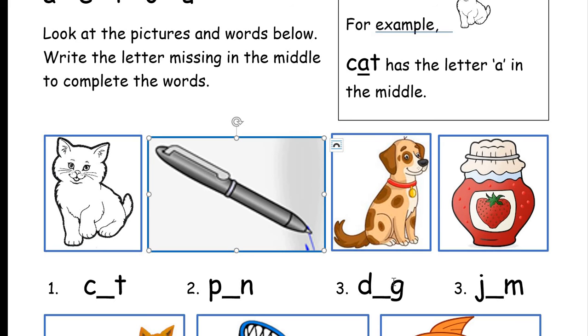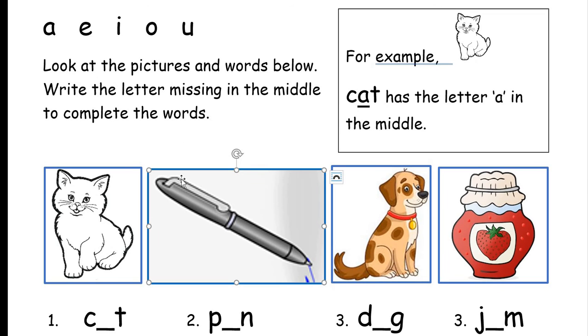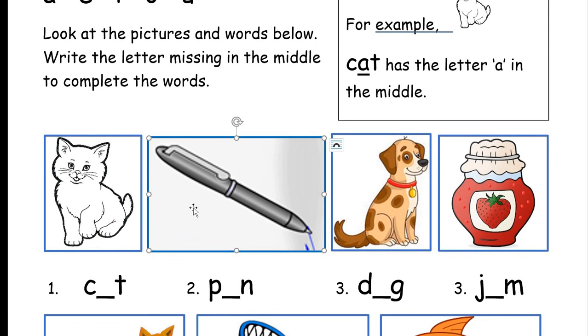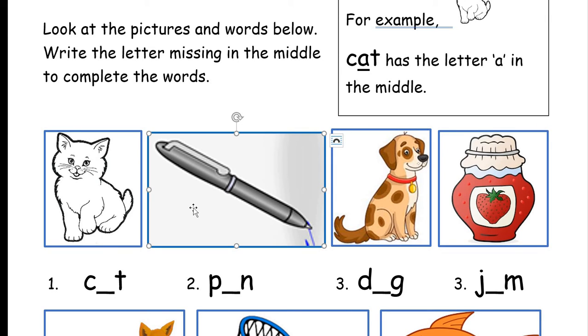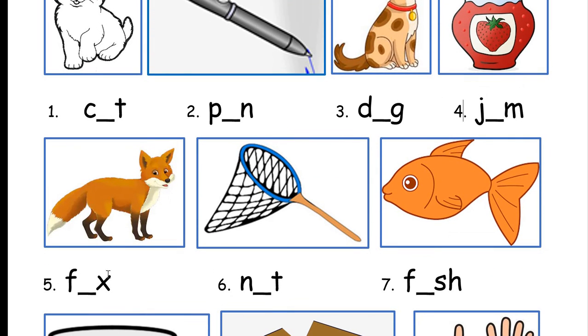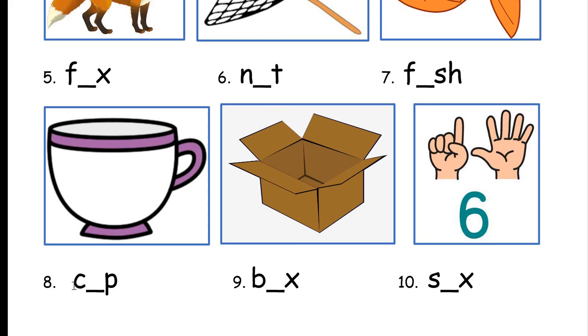Okay, dog has an O sound in the middle. Which letter makes the O sound? Okay, so I'm going to read all the words, and you have to find the missing letter, and I hope you can do your best. Number one, cat. Number two, pen. Number three, dog. Number, oh, that's a mistake. Number four, jam. Number five, fox. Number six, net. Number seven, fish. Number eight, cup. Number nine, box. And number ten, six.